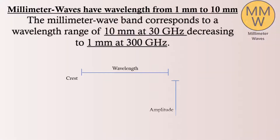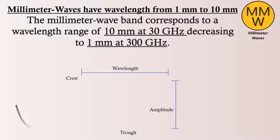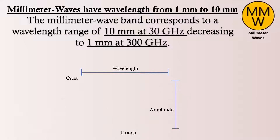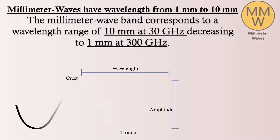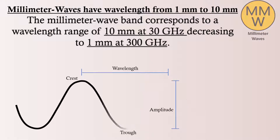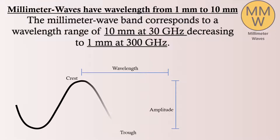Millimeter waves are broadcast at frequencies between 30 and 300 GHz. They are called millimeter waves because their wavelengths vary from 1 to 10 mm. For comparison, the radio waves used in today's smartphones measure tens of centimeters in length — around 1000 times longer than millimeter waves.